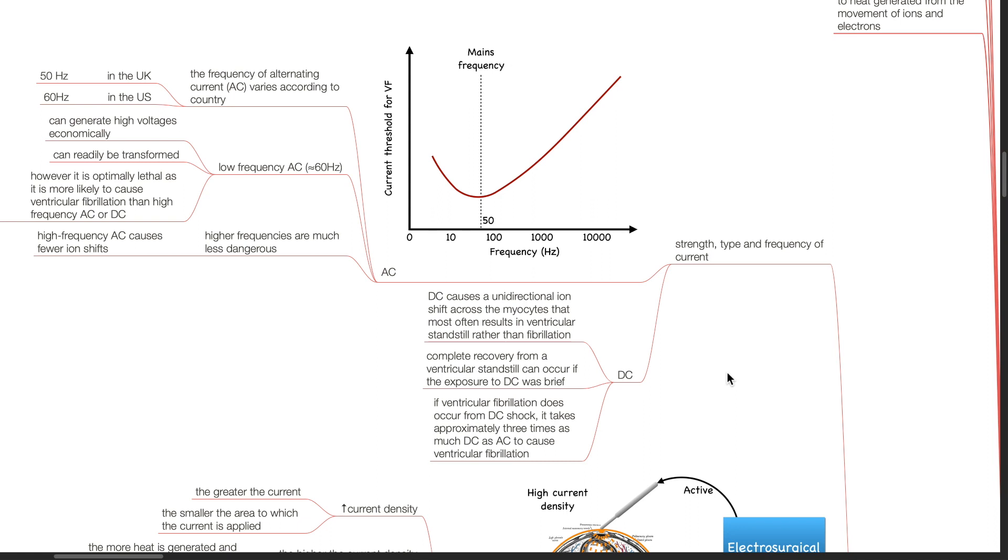DC causes a unidirectional ion shift across the myocytes that most often results in ventricular standstill rather than fibrillation. Complete recovery from ventricular standstill can occur if the exposure to DC was brief. If ventricular fibrillation does occur from DC shock, it takes approximately three times as much DC as AC to cause VF.